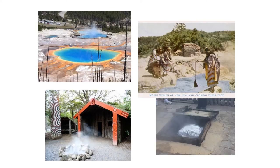Here are some more pictures of hot water springs. The first is a geyser; the yellow surroundings are due to minerals, especially sulfur. In the other pictures, Maori women of New Zealand are cooking food by dipping bags containing food into the hot water spring. Maori villages in New Zealand have some tribes which still follow these old methods of cooking food in hot water springs. This is environmentally friendly and non-polluting.